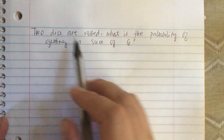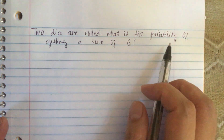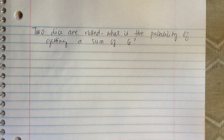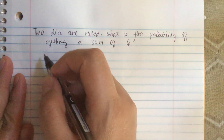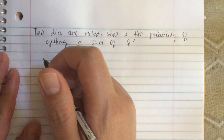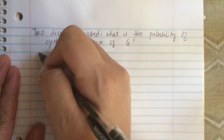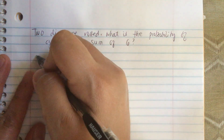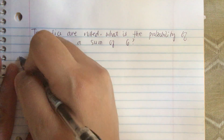Two dice are rolled. What is the probability of getting a sum of six? There are two dice, and dice have six faces numbered from one to six. Here's the first die.